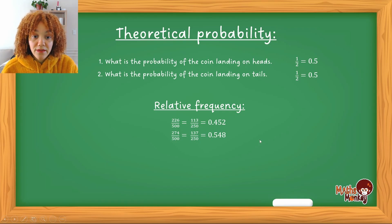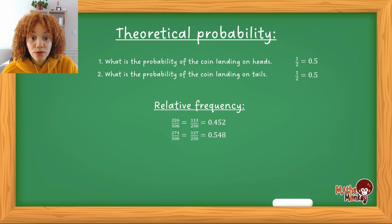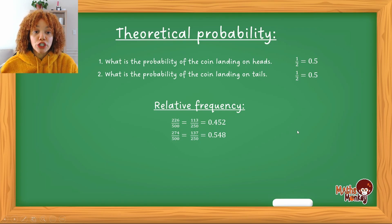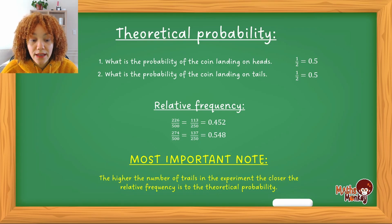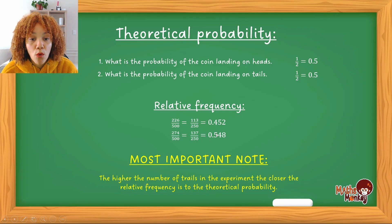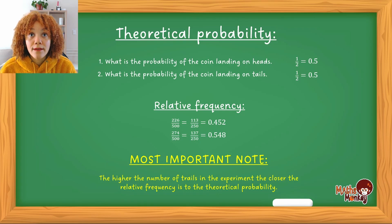So the important thing here that you need to understand is the higher the number of trials in an experiment, the closer the relative frequency will come to the theoretical probability. So in other words, the more times we do this experiment of the coin tossing, so let's say I decide to toss this coin a thousand times or ten thousand times or one million times...